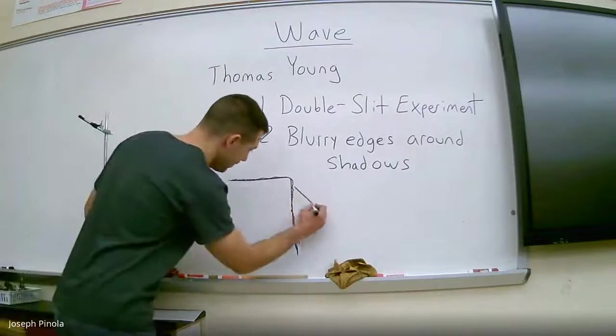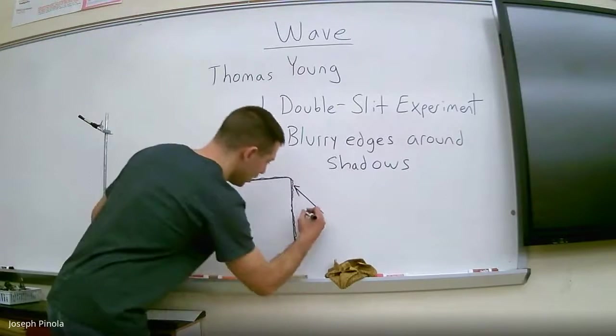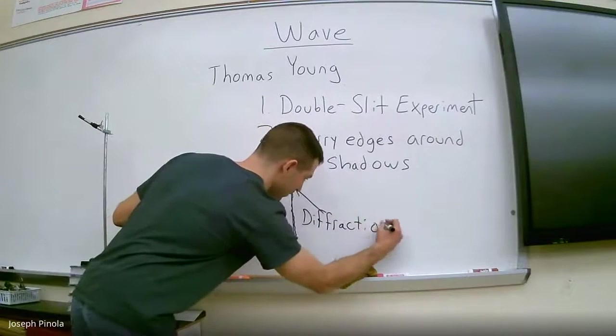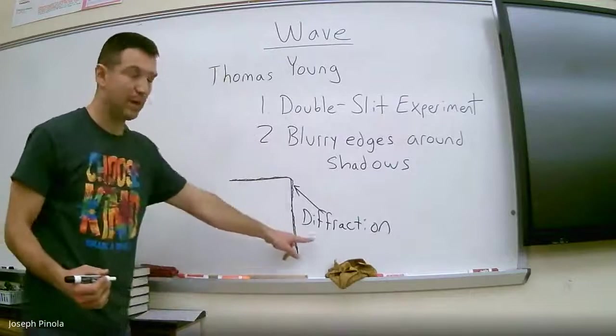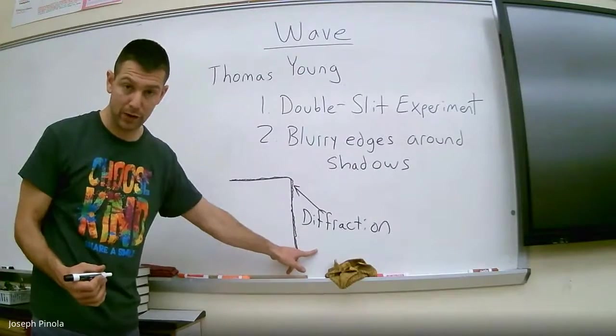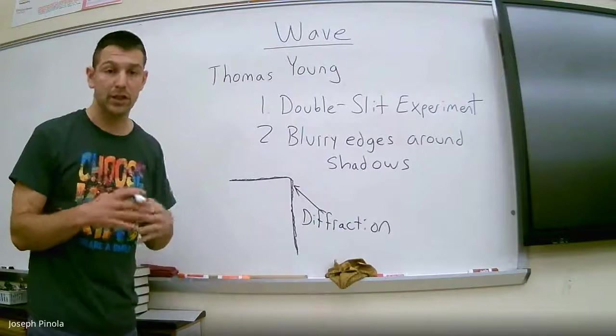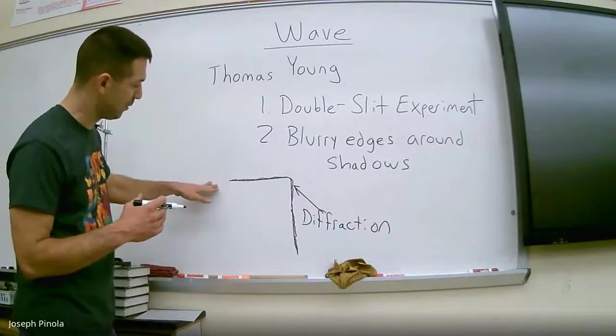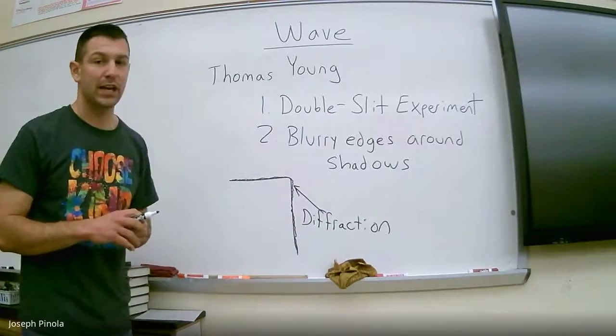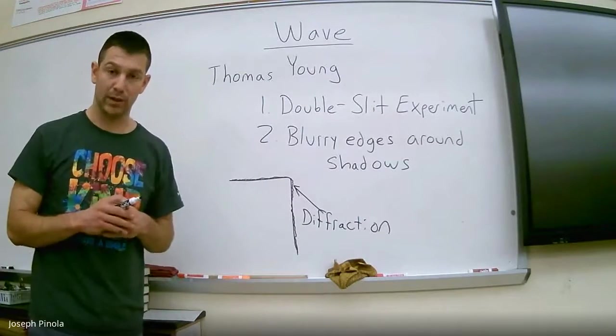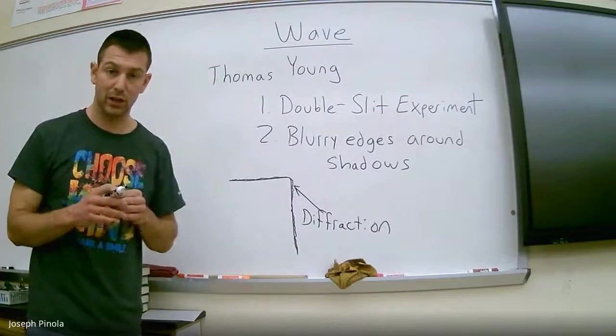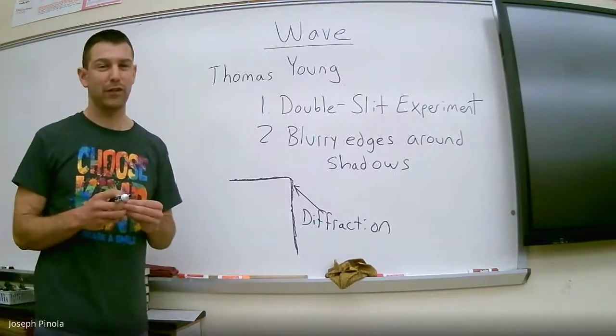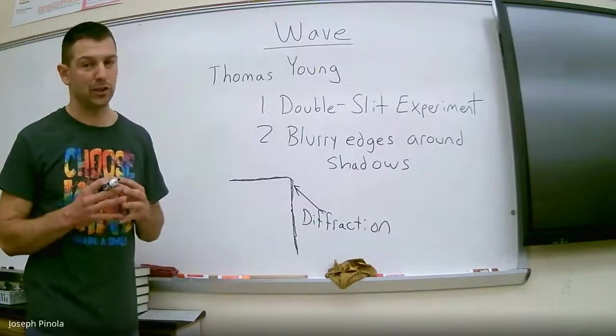And Young said, hey, the blurriness on the edges, that's caused by diffraction. And you might remember diffraction from our last wave unit. That's when a wave bends to move around a barrier. And so Thomas Young said that this is what was happening with light, that it was bending to move around the edges of the object that was creating the shadow. So Thomas Young used Newton's bit of evidence of shadows almost against him to now give evidence that light could potentially be a wave.